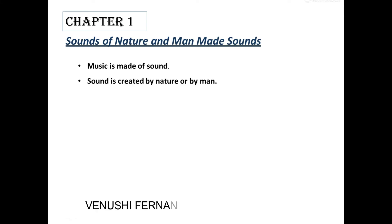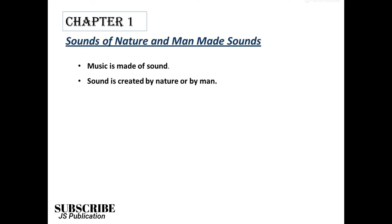Music is made of sound. Sound is created by nature or by man. Some of the sounds are musical, but some of them are un-musical. This is not included in your lesson, but in your exam it is useful to you. Some examples for musical sounds are the sound of the piano, trumpet, or any musical instrument, and when someone is singing, it is also musical.